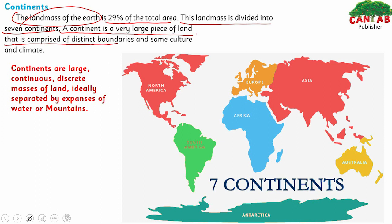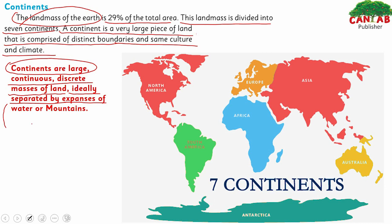A continent is a very large piece of land that is comprised of distinct boundaries and same culture and climate. Continents are large, continuous, discrete masses of land, ideally separated by expanses of water or mountains.